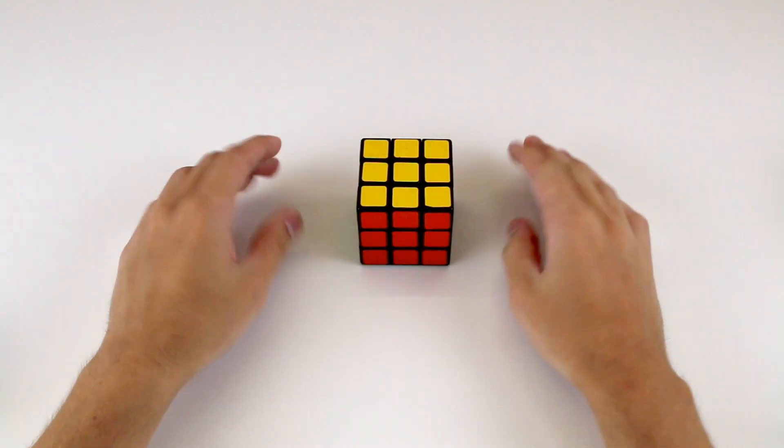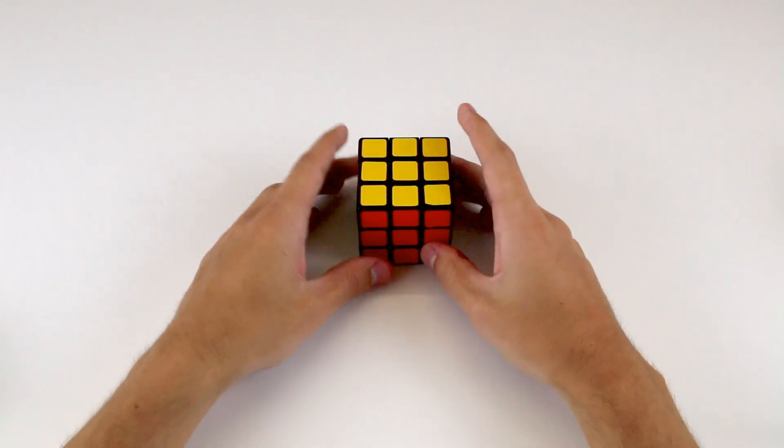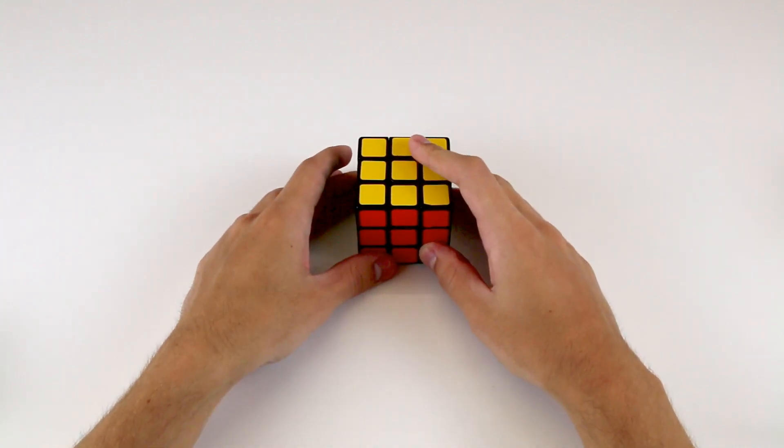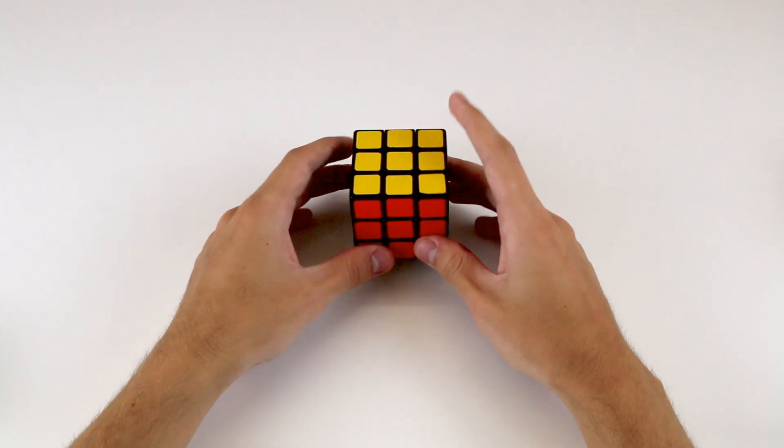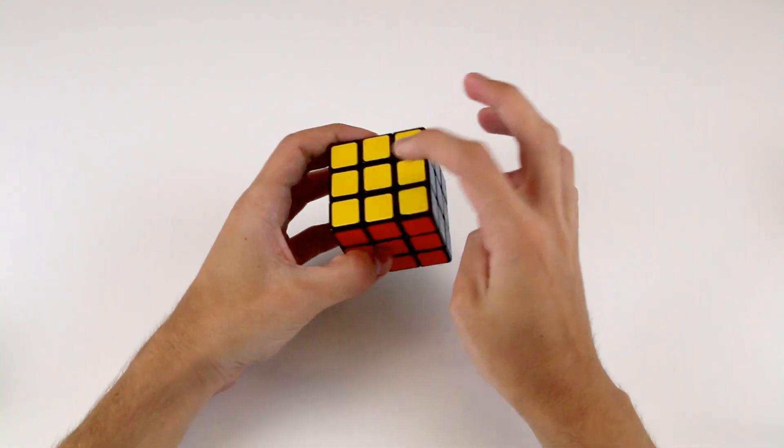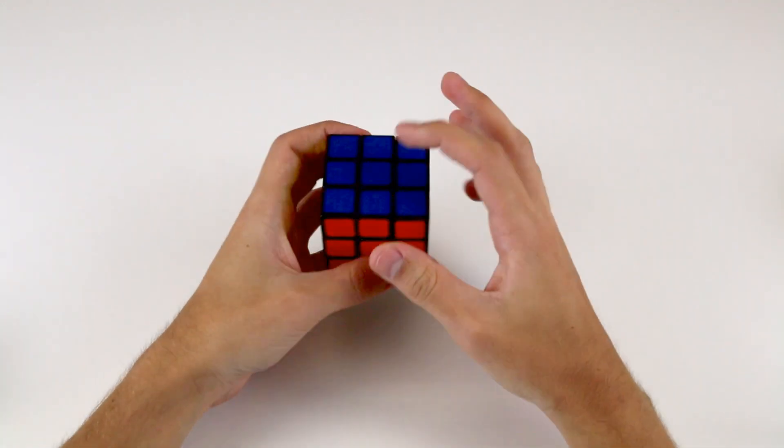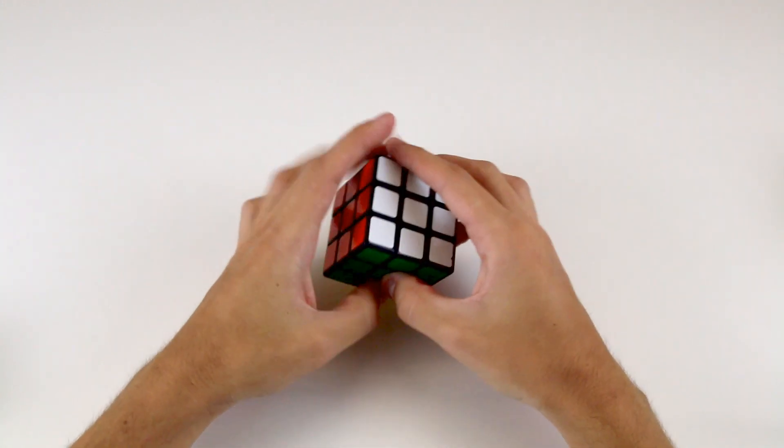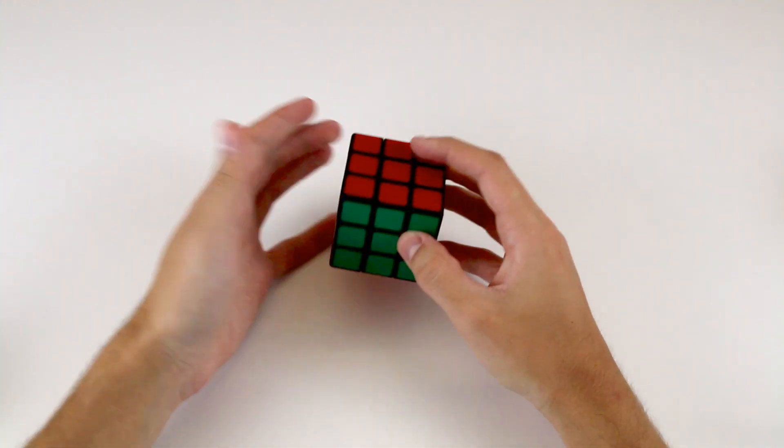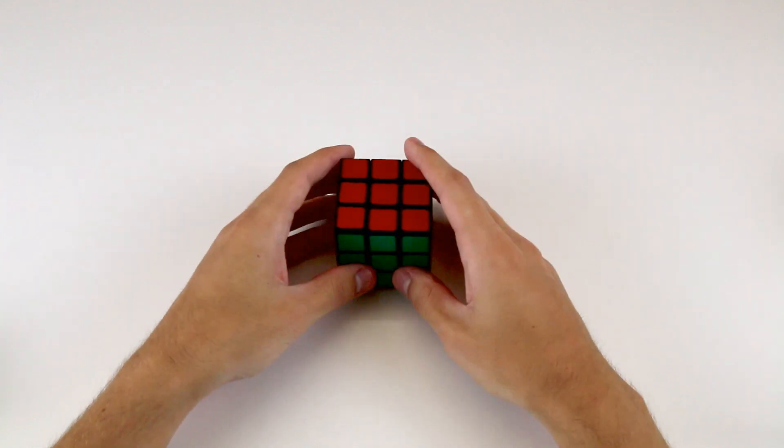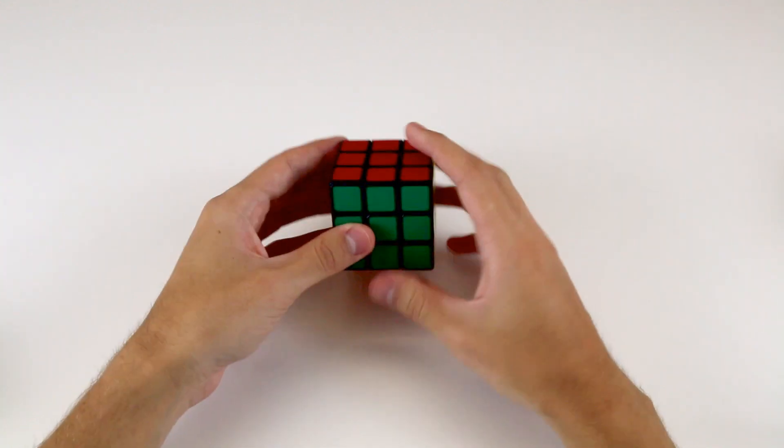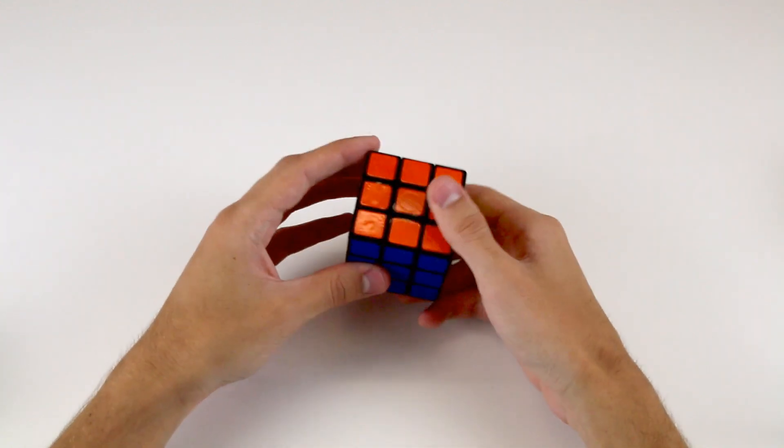So we're going to start with the absolute basics, which is that there are six sides on a Rubik's Cube. The standard color scheme has the white side opposite the yellow side, the green side opposite the blue side, and the orange side opposite the red side. And the layout of these sides is fixed, as you'll see shortly, so these color pairs will always be opposite one another when your cube is solved.